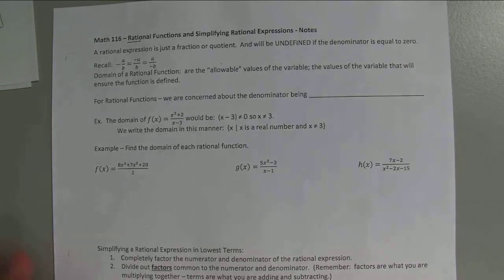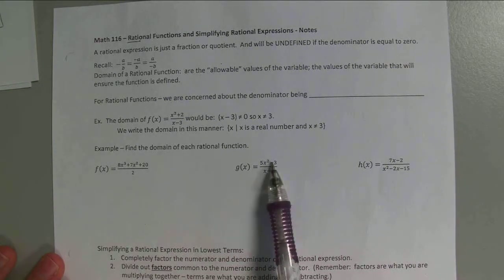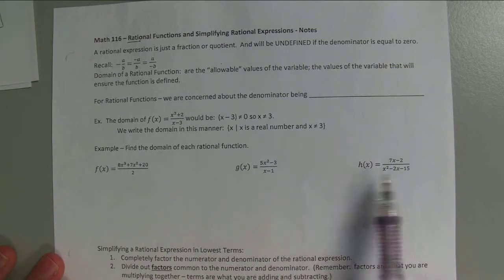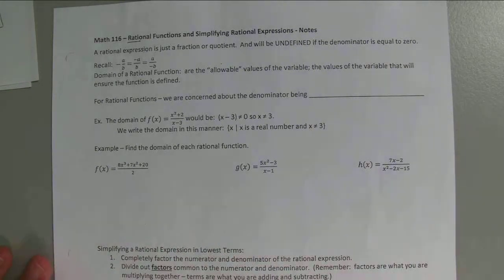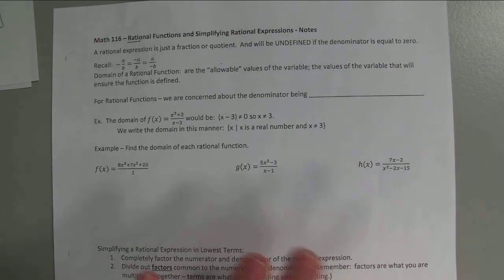So just real quickly, if you look at these, see how they're over each other. They're a different function, so they're going to have a different graph. Our quadratic had a parabola; rational functions have a different graph. We don't really study it a whole lot.